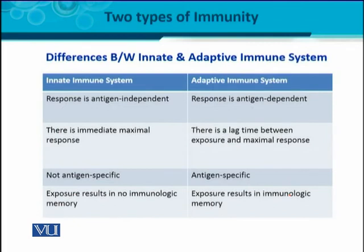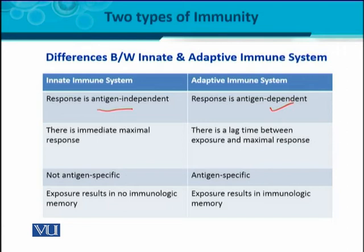To differentiate between the innate and adaptive immune systems: in the innate immune system, the response is antigen-independent. Antigen is a substance that has the ability to activate or interact with the immune system. In the innate immune system, there is antigen independency — the immune system is always ready regardless of antigen. But in the adaptive immune system, antigen dependency is very important. Until or unless the antigen is present, the adaptive immune system will not be activated and will not show a response. That is the basic difference between the two.